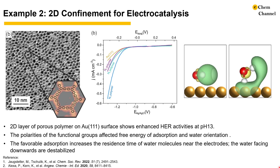In addition, they found that the N3 polymer causes the hydrogen in the water molecule to face downwards, which destabilizes the molecule and favors water dissociation.